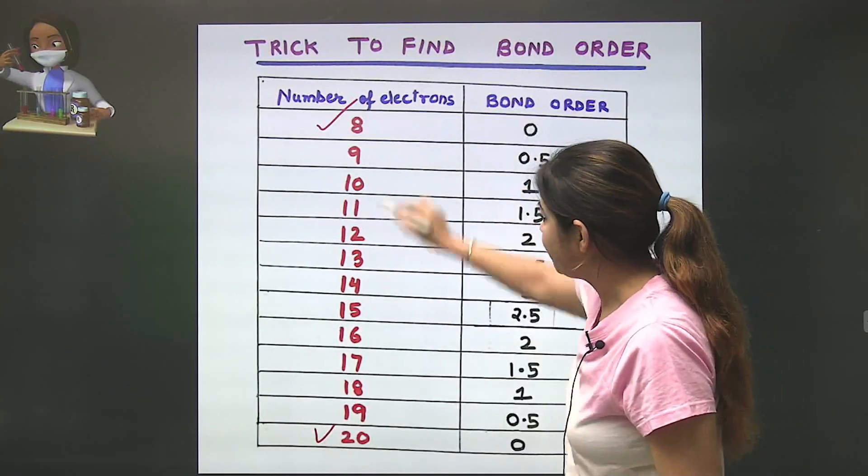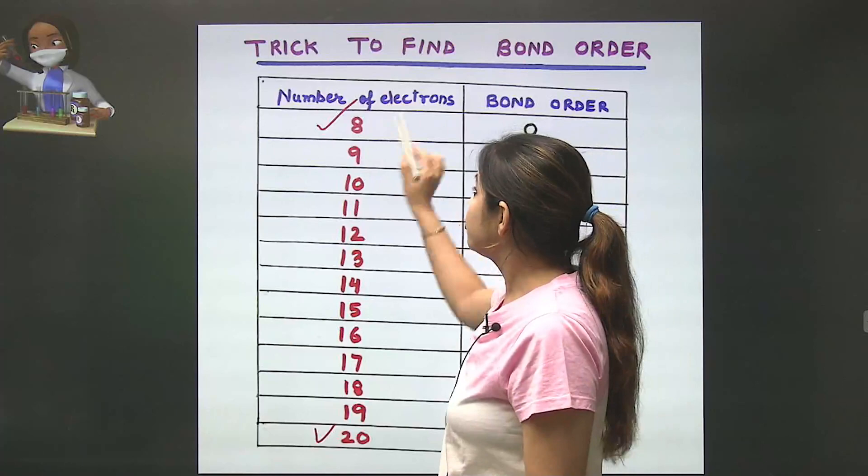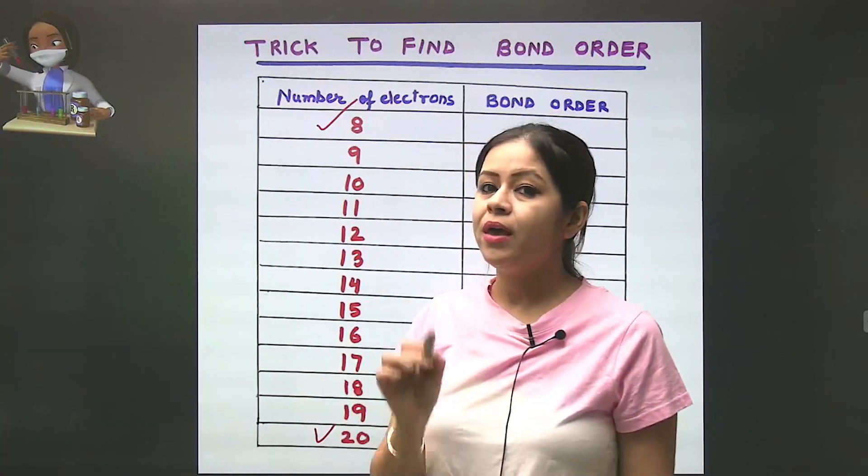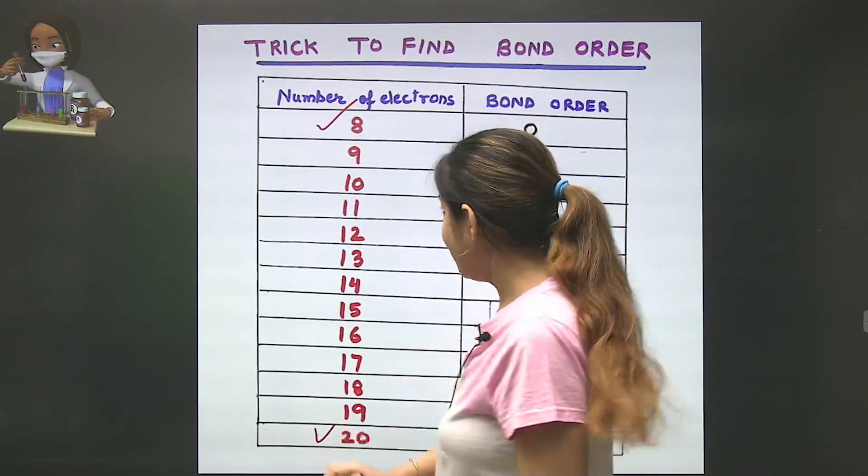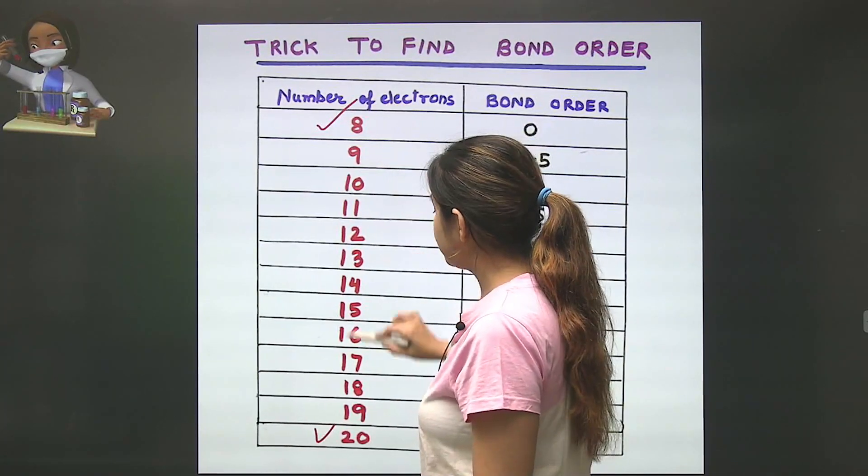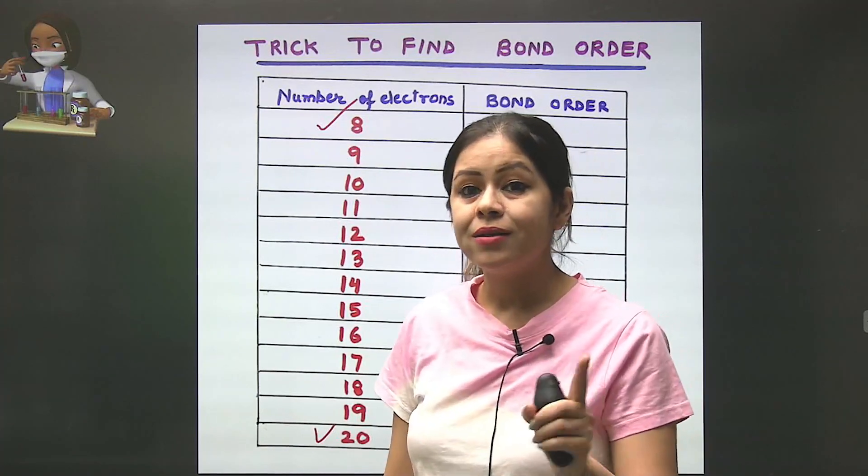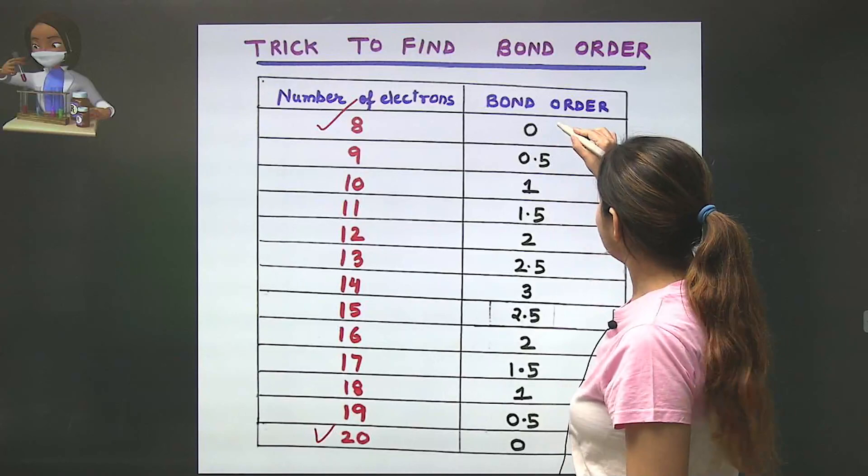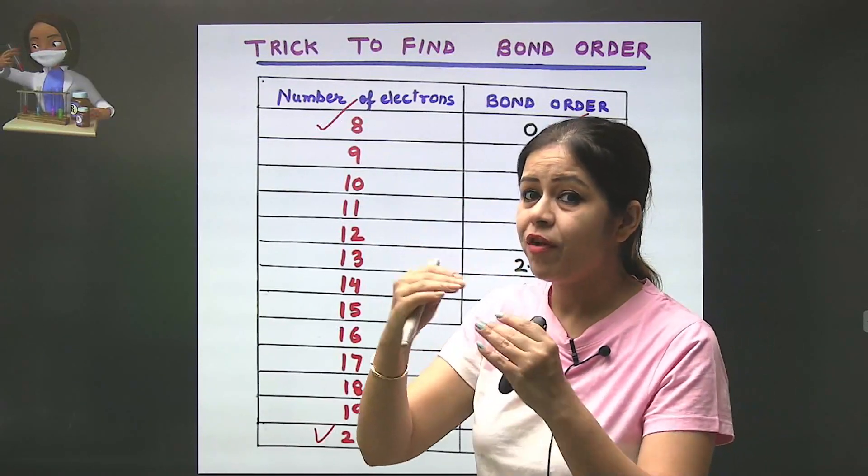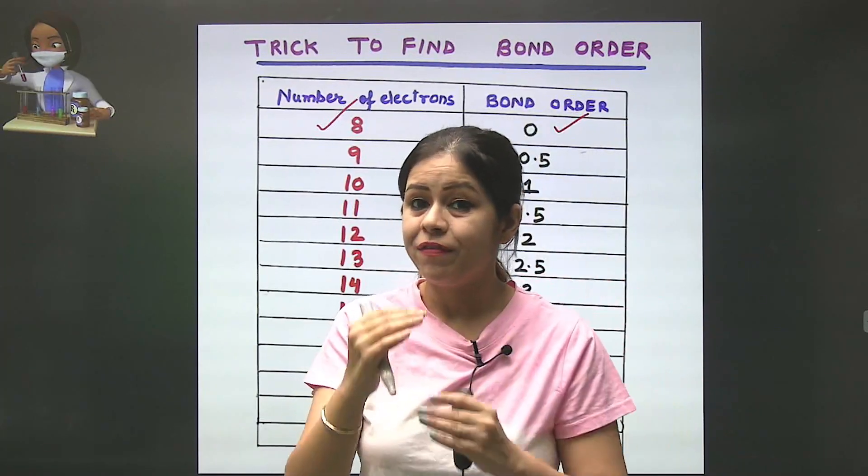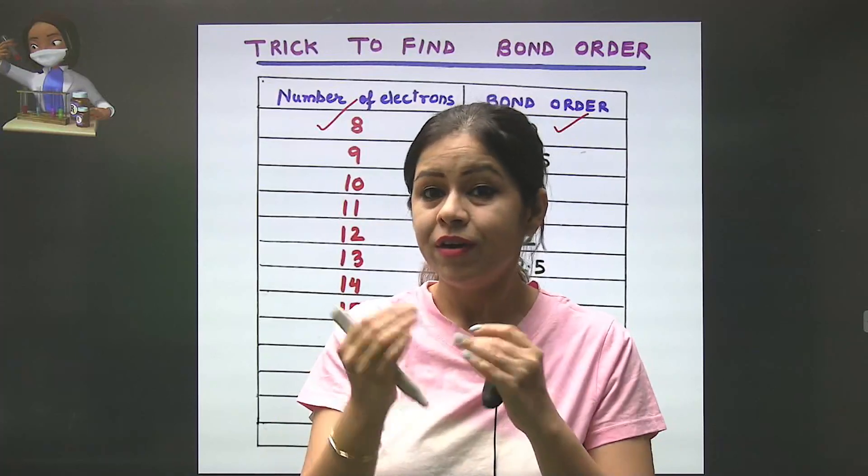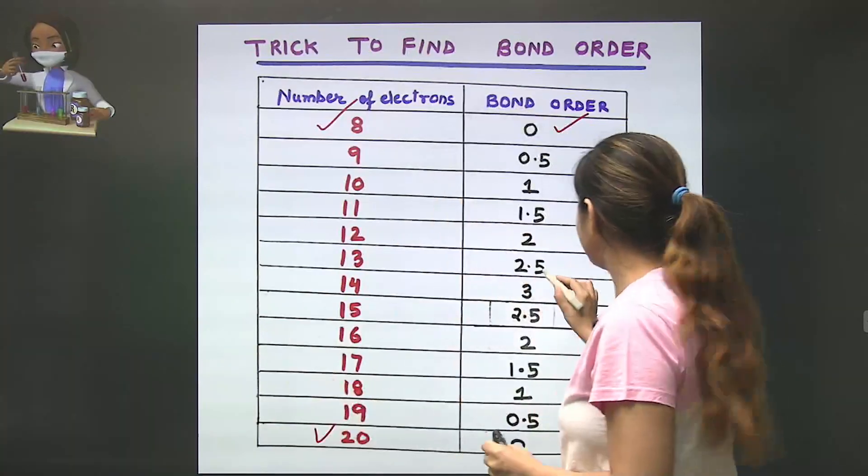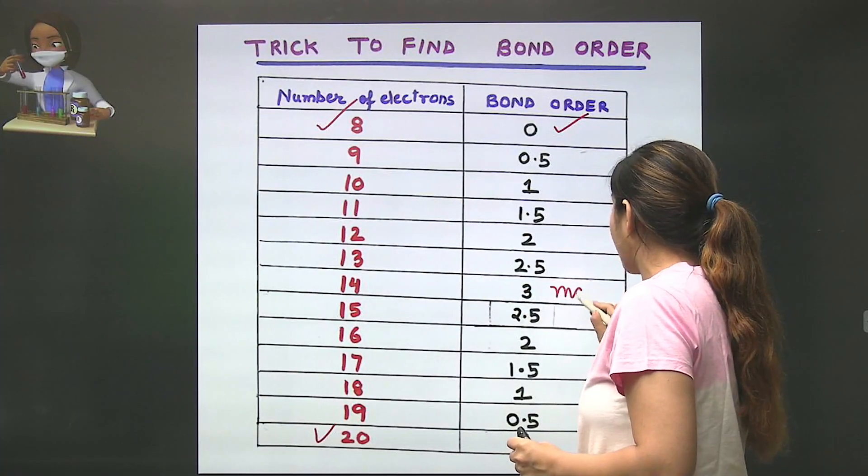The number of electrons goes: 8, 9, 10, 11, 12, 13, 14, 15, 16, 17, 18, 19, 20. For bond order, we start with 0, then 0.5, then another 0.5, then 1, then 1.5, then 2, then 2.5, then 3. After 3, we start decreasing. 3 is the maximum.